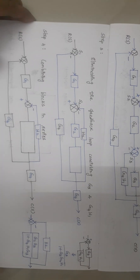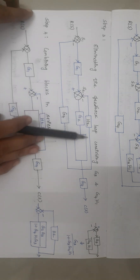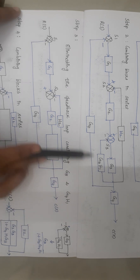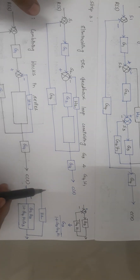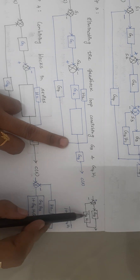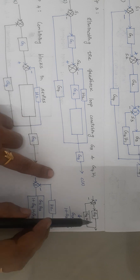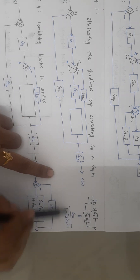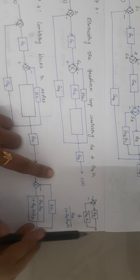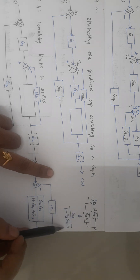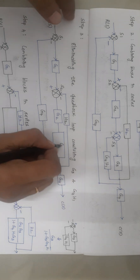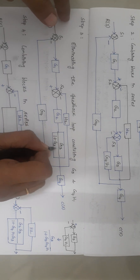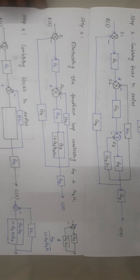Step number 3 is to eliminate the feedback loop. This is the feed-forward element and this is the feedback element, and the type of feedback is negative. The formula for reducing a feedback loop is G/(1 + GH). Here G is G3 and H is G4·H1, so the expression reduces to G3/(1 + G3·G4·H1).